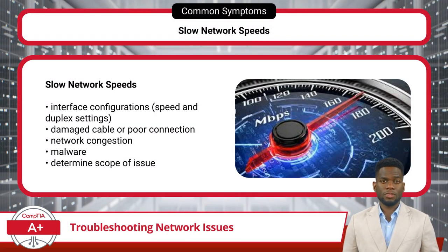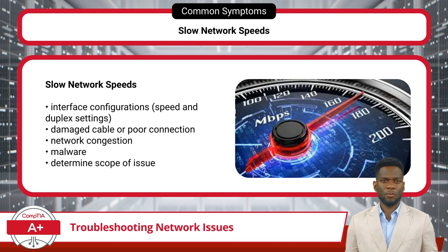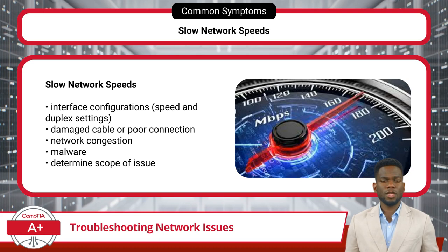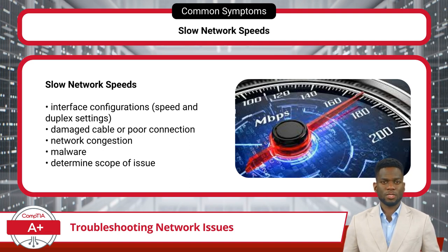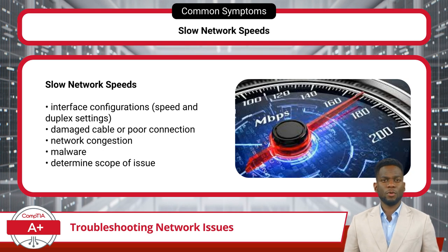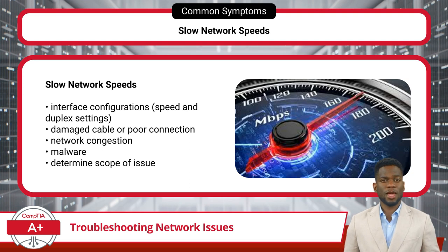Slow network speeds is another potential networking issue. Several factors must be considered to pinpoint the root cause and implement effective solutions. Interface configurations, particularly speed and duplex settings, can significantly affect network performance. Incorrectly configured speed and duplex settings may lead to data packet loss or transmission errors, resulting in slow network speeds. Users should ensure that network interface cards and switches are configured to match the network's requirements. Damaged cables or poor connections can also contribute to slow network speeds.